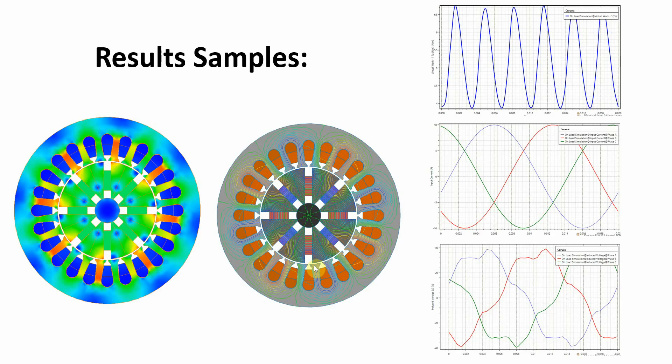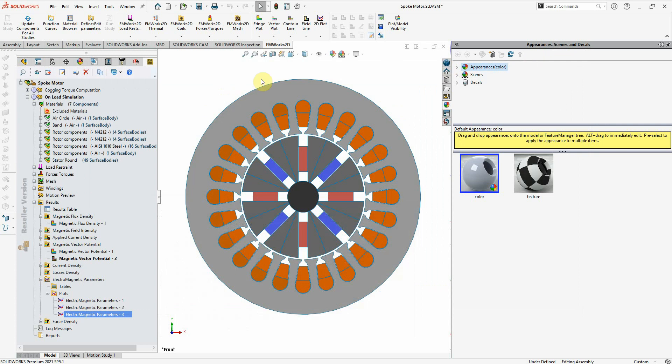Here is a sample of results that we can get directly in the SOLIDWORKS software by EMworks2D: the distribution of the flux density and the flux lines, the generated torques, the current and the voltage of the windings. This is the environment of the software in SOLIDWORKS and in the next videos, we will do the step-by-step simulation of this motor.